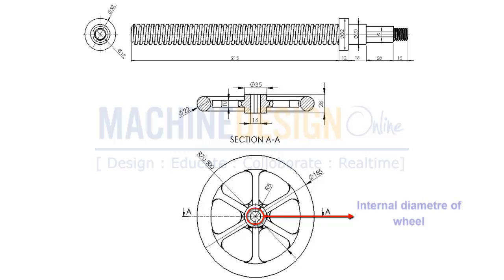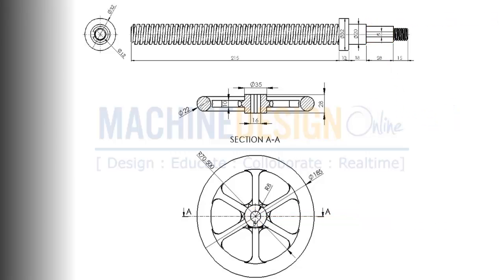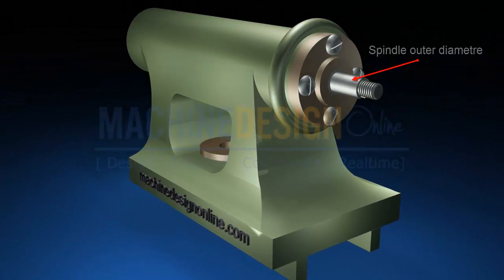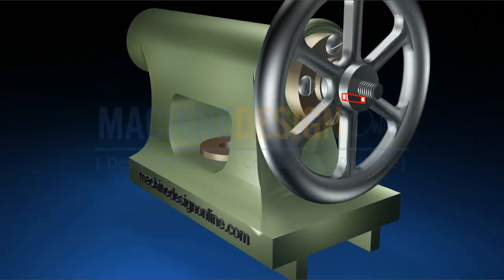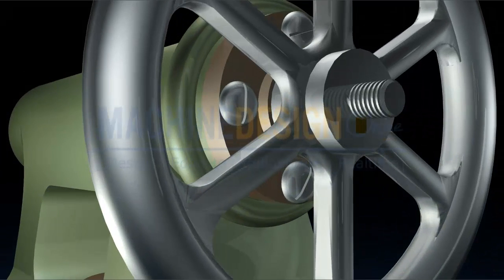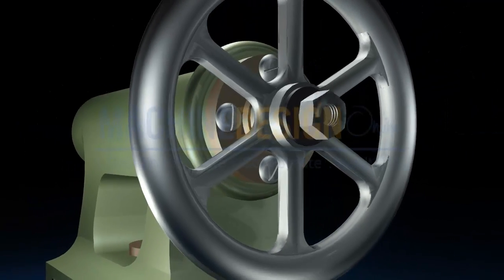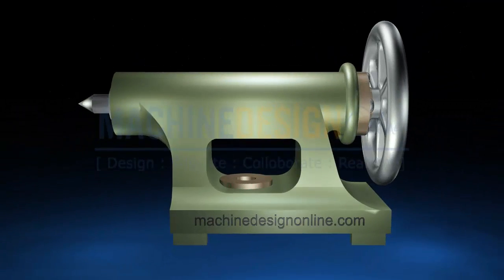Internal diameter of wheel matches with spindle outer diameter and also width 28mm matches. So place wheel on spindle portion which has common dimensions. We can see that there is a slot for feather key on spindle, so place key at this position. Now use a washer and nut as dimensions are matching with the spindle remaining portion.